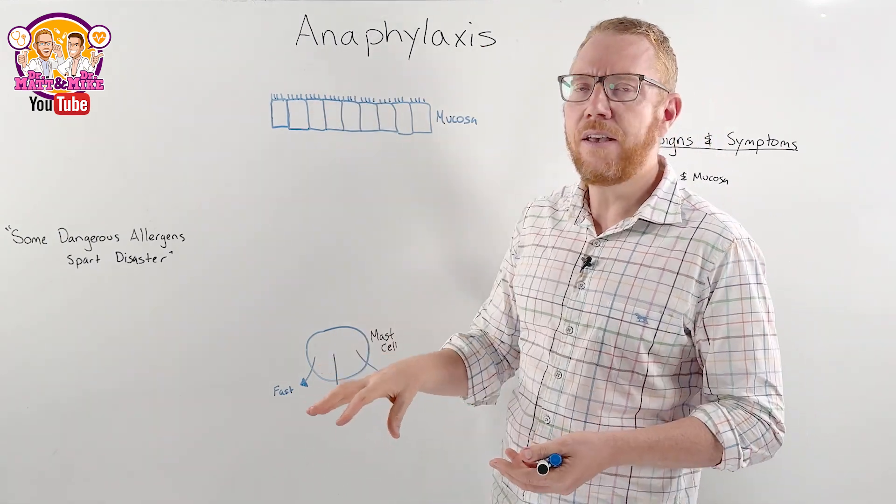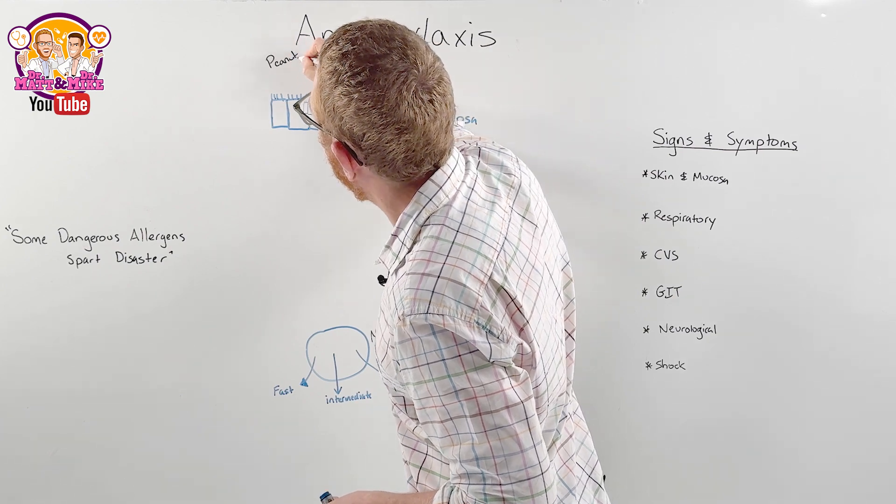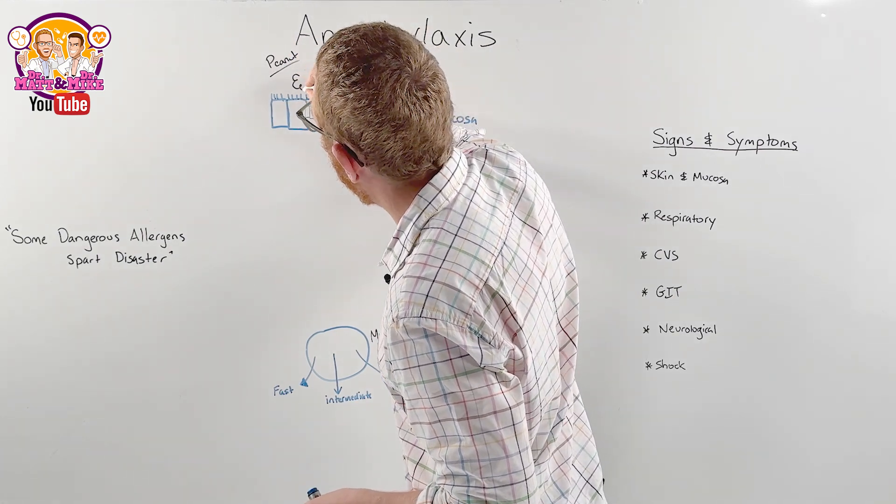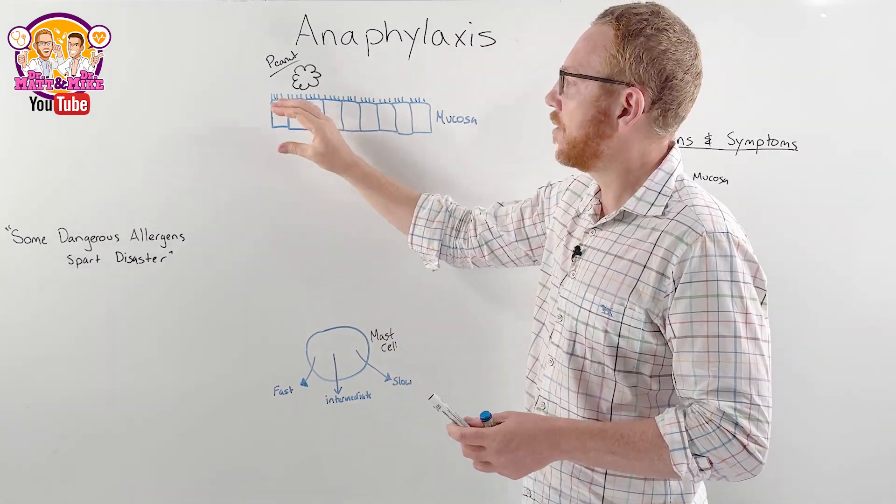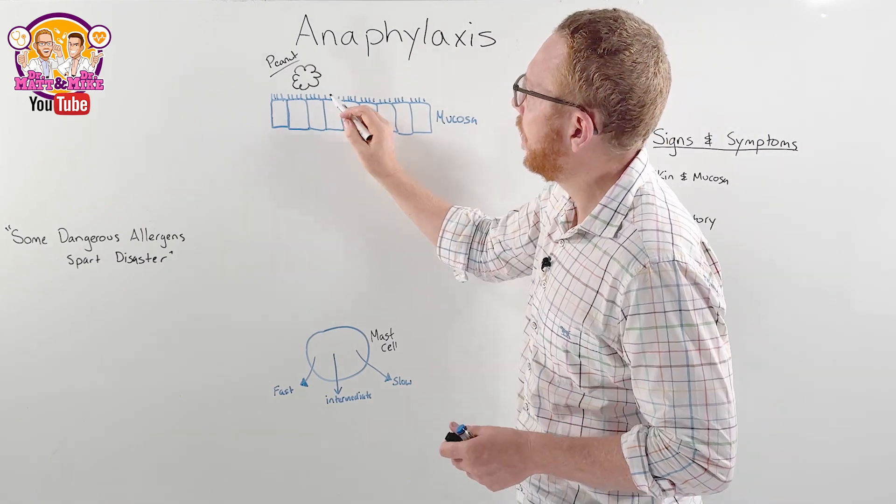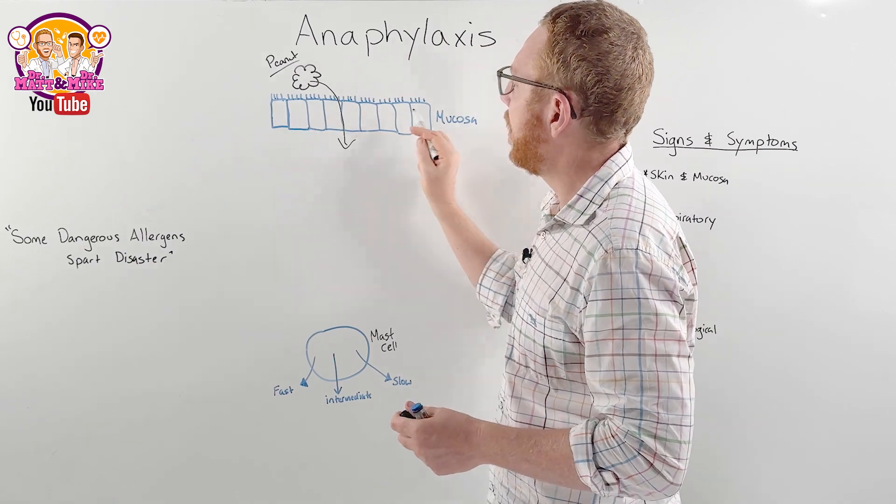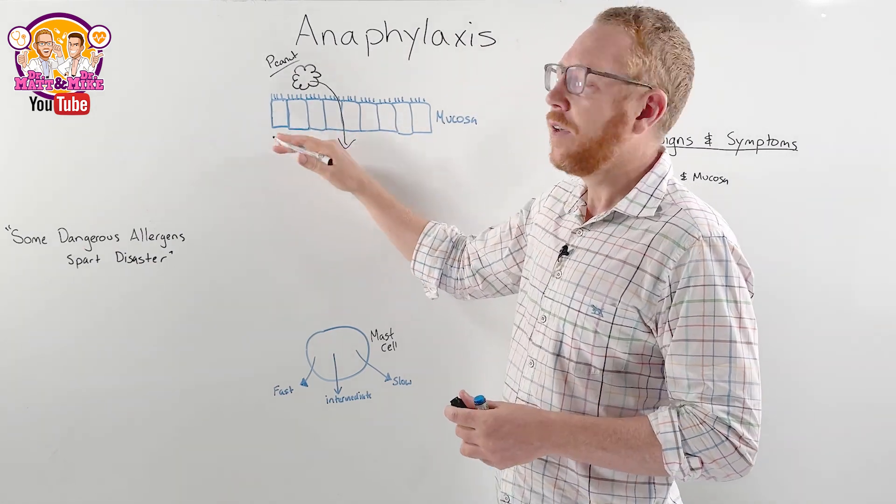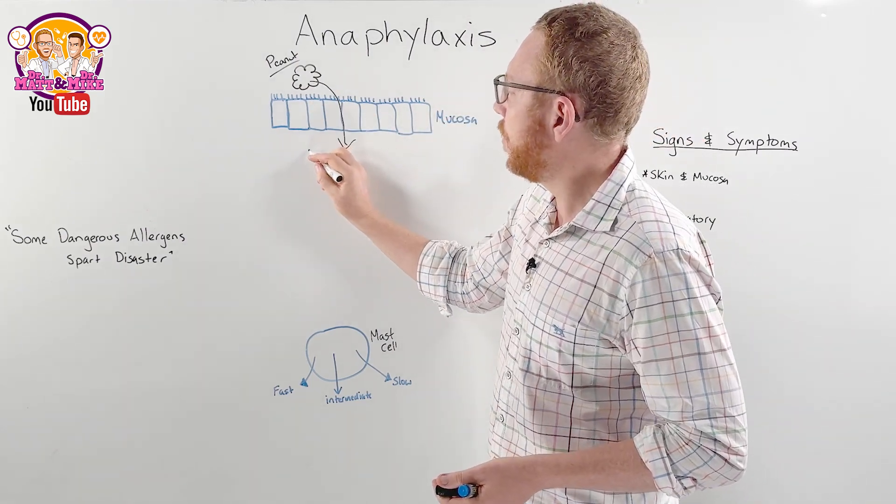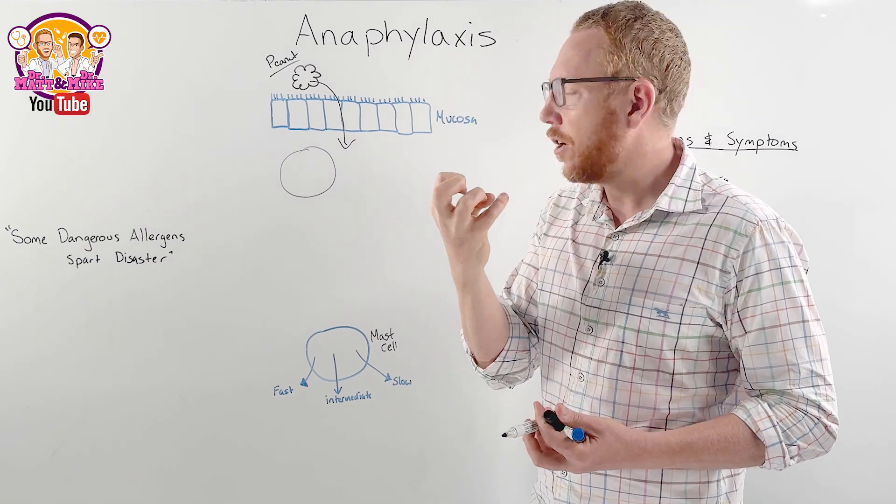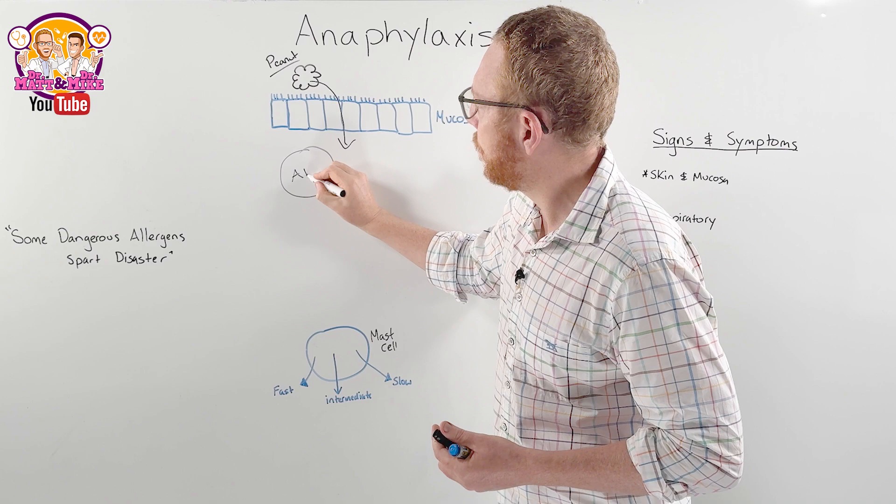And then the immune system overreacts and causes quite serious outcomes. So let me go through a process here with something fairly common. We'll call it peanuts. So the peanut is the antigen. So let's say here's the peanut and it's coming in. We've just eaten some peanut butter. This is the mucosa. So this is the lining of your mouth.